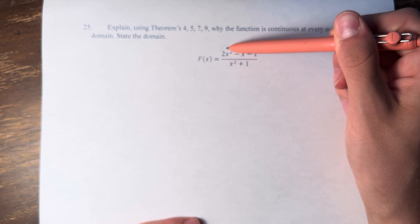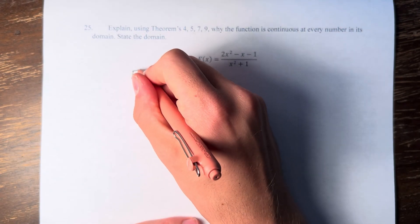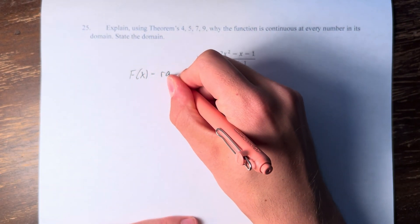What we have here is one polynomial divided by another. This means f(x) is a rational function.